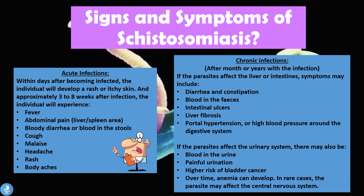Over time a chronic infection can develop, usually after months or years. If the parasites affect the liver or intestine, symptoms may include diarrhea and constipation, blood in the feces, intestinal ulcers, liver fibrosis, and portal hypertension. If the parasites affect the urinary system, there may be blood in the urine, painful urination, and a higher risk of bladder cancer. Over time anemia can develop, and in rare cases the parasite may affect the central nervous system, as the blood flukes can travel to and infiltrate different areas of the body.